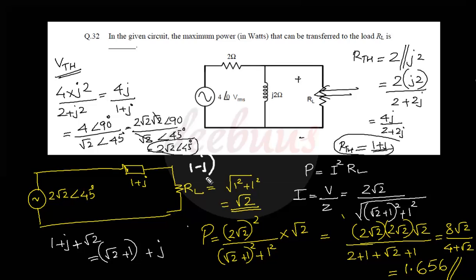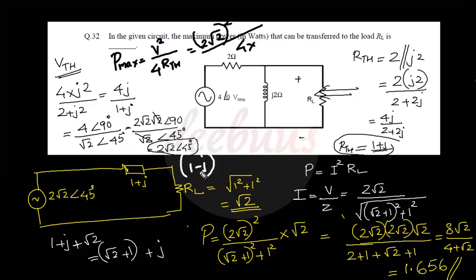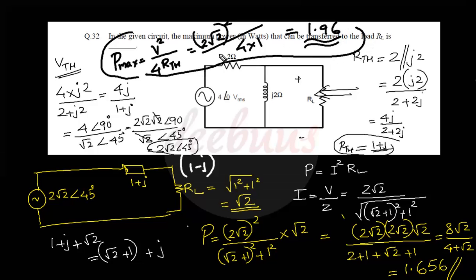For comparison, if the load were a complex impedance, the optimal load would be Z_L = 1 − j (conjugate of Z_th), giving maximum power = V²/(4 × R_th) = (2√2)²/(4×1) = 8/4 = 2 W — approximately 1.96 W. For this question with a purely resistive load, the answer is 1.656 W. For more GATE tutorials, subscribe to my channel. Thank you.